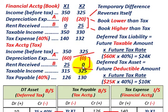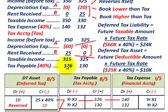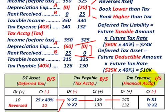For recording: tax payable on the balance sheet — year X1 we credit $126,000, year X2 we credit $130,000. For tax expense on the income statement — year X1 we debit $140,000, year X2 we debit $132,000.